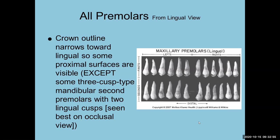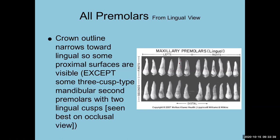From the lingual view, the crown outline narrows towards the lingual, so some of the proximal surfaces are visible. The embrasure spaces are larger on the lingual because the teeth are generally narrower there. Looking at these illustrations, you can see some of the facial surface from the lingual view because the lingual is narrower than the facial.